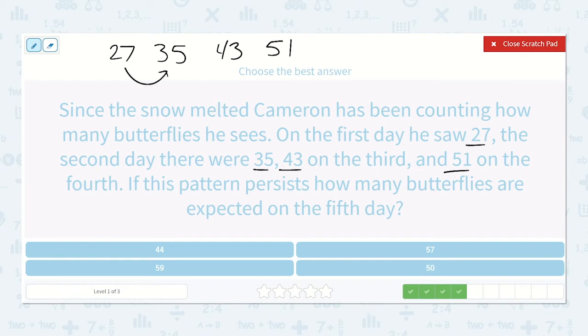27 to 35. Well, I know 27 to 30 is just 3, and then we can add 5 to that, so that's 8. 35 to 43, well, 5 more than 35 is 40, and then 3 more, so that is 8 as well. And then 43 to 51. Well, I know 43 to 50 is 7, and one more would be 8. So let's see what is the missing number. 51 plus 8. That would be 59.